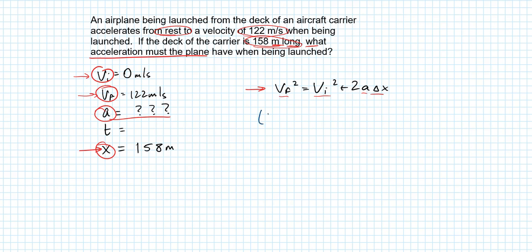We'll go blue. So 122 squared is equal to zero squared plus two times the acceleration, which we don't know, so we'll just leave it as an a, times delta x, which is 158.